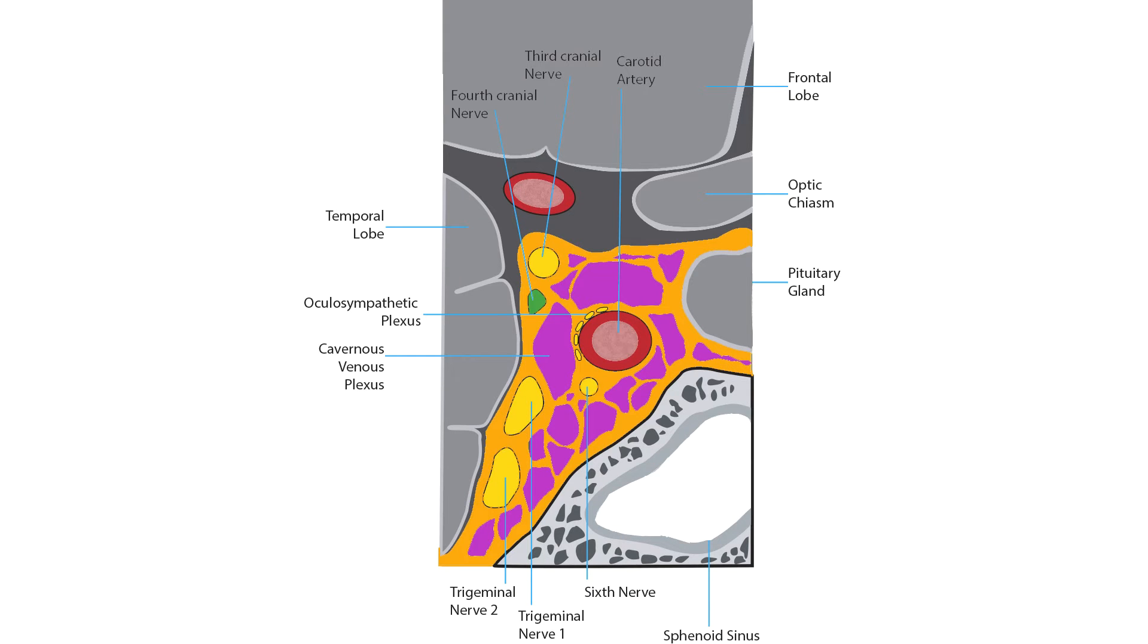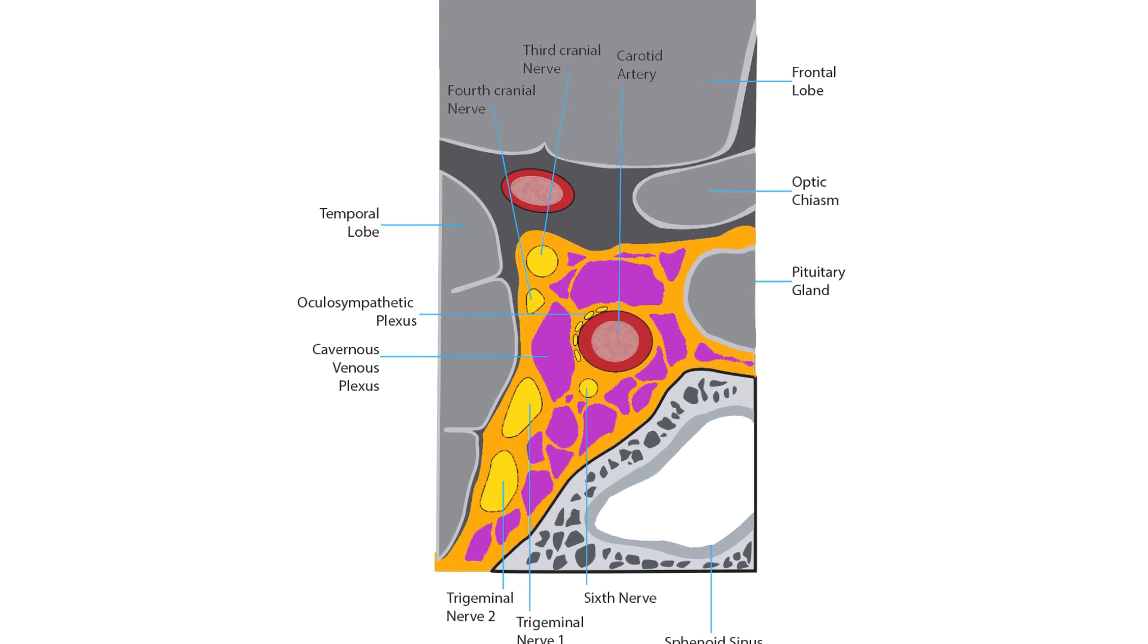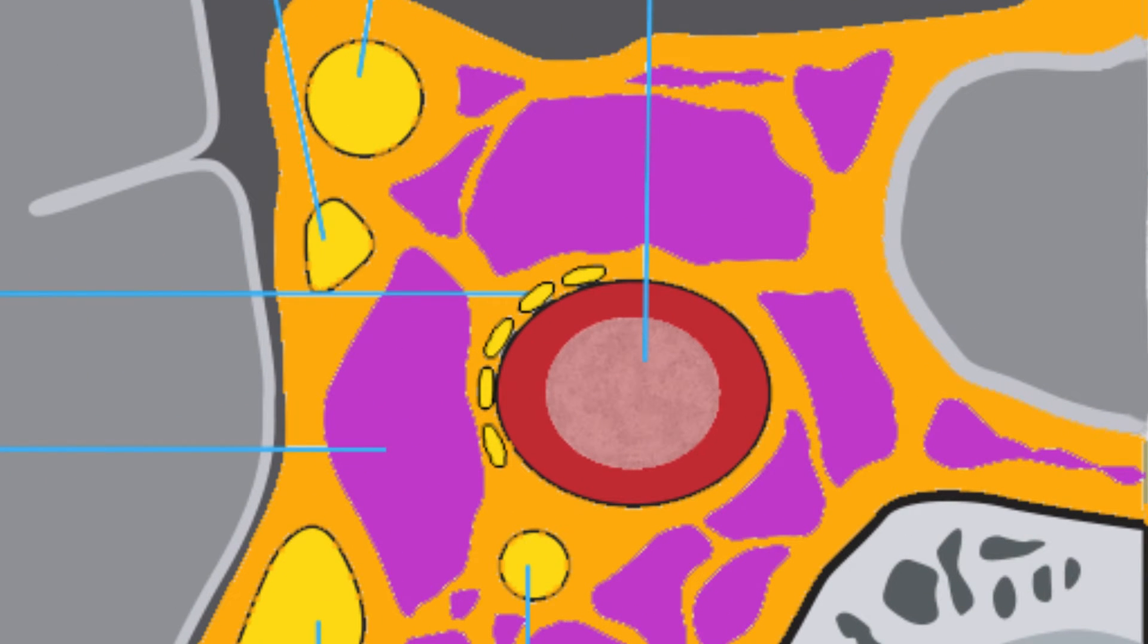The cavernous segment of the fourth nerve lies ventral to the third nerve in the outer dural wall of the cavernous sinus. It can be damaged by any lesion in the cavernous sinus region, but the fourth nerve is the most resistant to compressive injury of the three cranial nerves traveling in the outer wall of the cavernous sinus, so do not expect to see an isolated fourth nerve palsy from a mass lesion in this region.